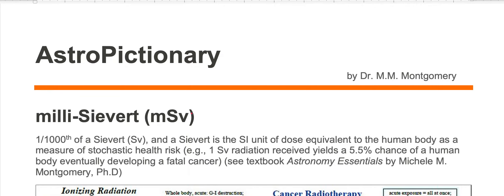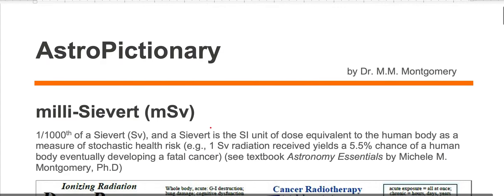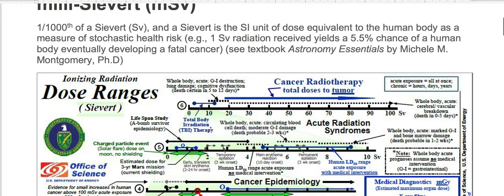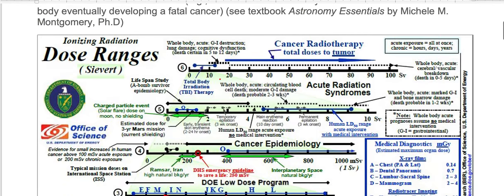What about 10 sieverts of radiation received? If the human body receives around 10, 11, 12, 13, to 20 sieverts of radiation, death will certainly occur between 5 and 12 days. The human body will have GI destruction, lung damage, and cognitive dysfunction.